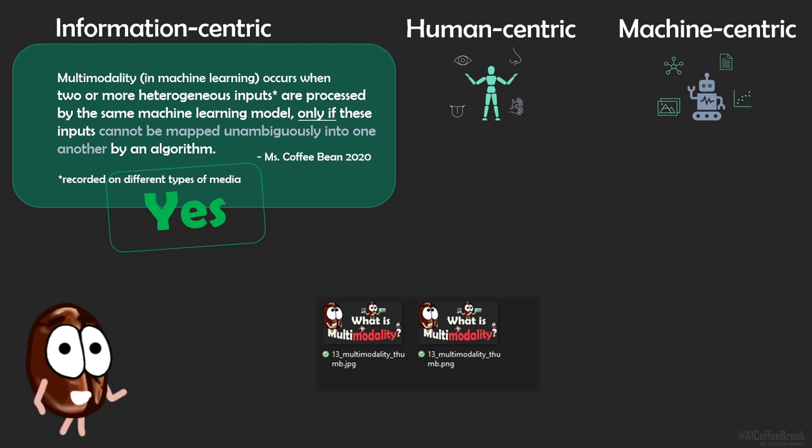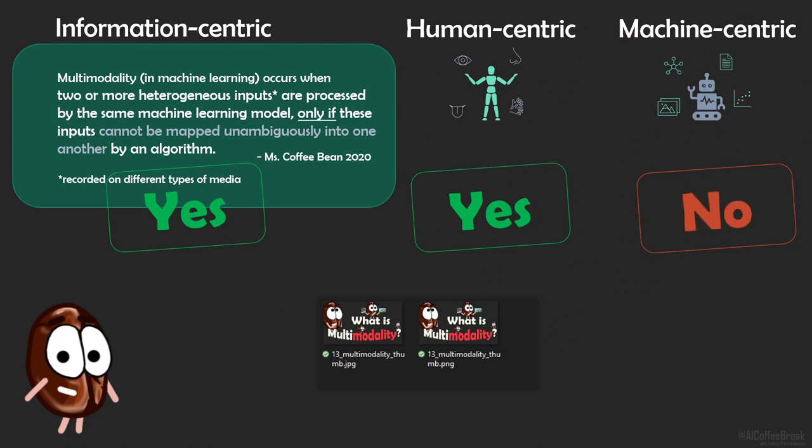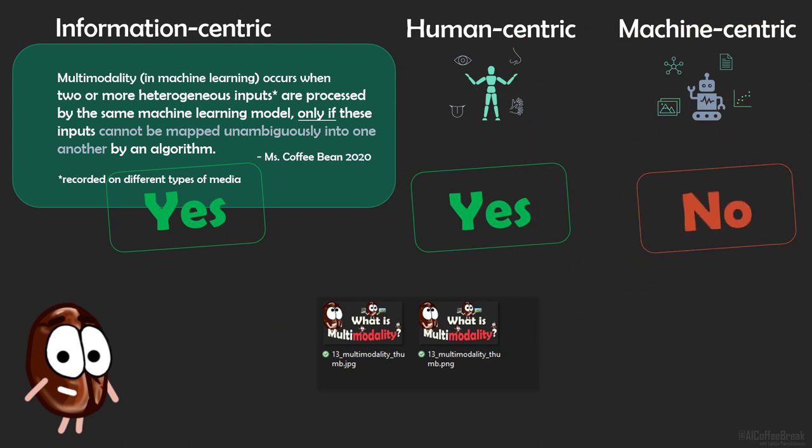In the human-centric view, they are also the same modality, since humans do not really care if the image is JPEG or PNG. For the machine, it is not the same, since PNG and JPEG are different encodings.